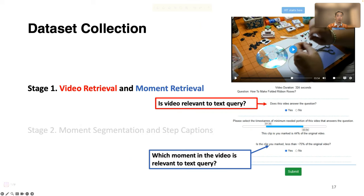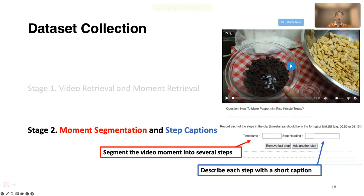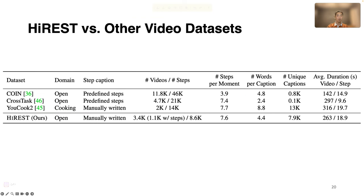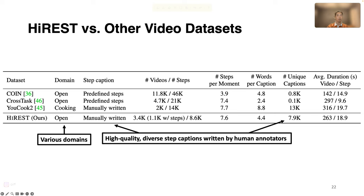We collect annotations of our HiREST dataset in two stages, on top of the HowTo100M instructional videos. In the first stage, we collect video retrieval and moment retrieval annotations by checking if the video is relevant to the text query and which moment in the video is relevant to the query. In the second stage, we collect moment segmentation and step captioning annotations by segmenting the moment into several steps and describing each step with a short caption. HiREST covers a wide variety of text queries including hobbies, making food, and home gardening, and provides high-quality diverse step captions written by human annotators.